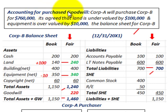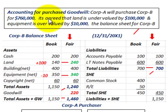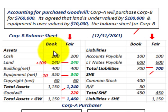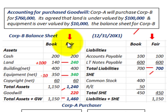We're going to be going through accounting for purchase goodwill, looking at a very basic example to calculate goodwill and how we would record it. Corporation A will purchase Corporation B for $760,000. It's agreed between Corp A and Corp B that the land is undervalued by $100,000 and the equipment is overvalued by $10,000. We're going to look at the balance sheet for Corporation B — their book value for assets and liabilities. When Corporation A purchases Corporation B, we have to determine the fair value of the assets and liabilities.